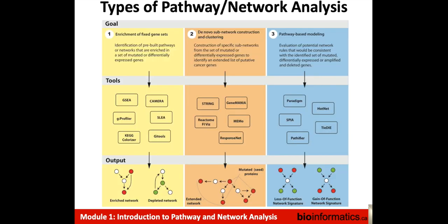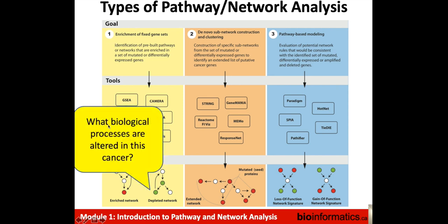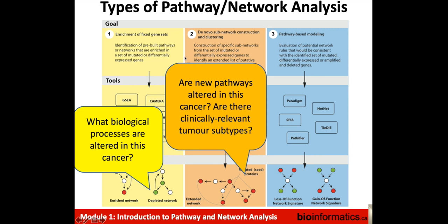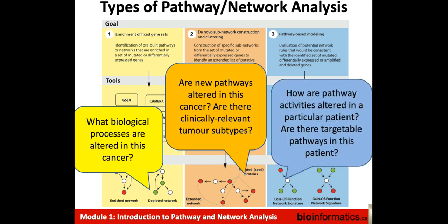There are many types of pathway and network analysis. For instance, enrichment of fixed gene sets answers the question of what biological processes are altered in my sample. De novo subnetwork construction and clustering usually answers questions like what pathways are altered in this sample, and it's not limited to known pathways — it could also identify new pathways or clinically relevant tumor subtypes. Pathway-based modeling is more advanced and can help identify if there are particular molecules that are important or critical in a pathway given the data you've collected.